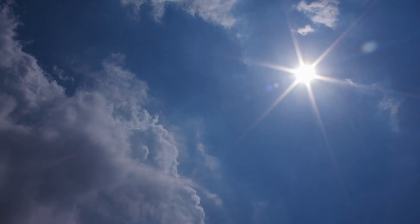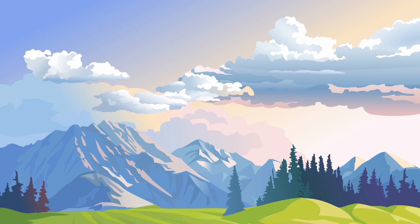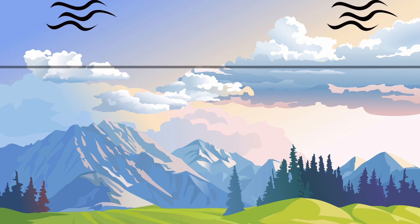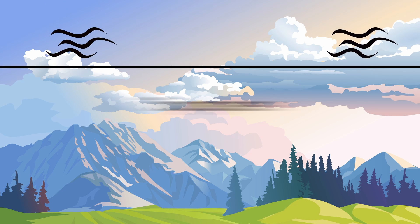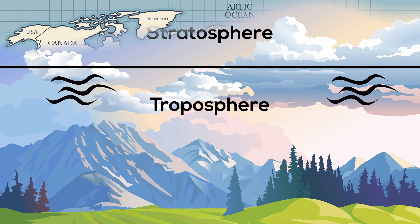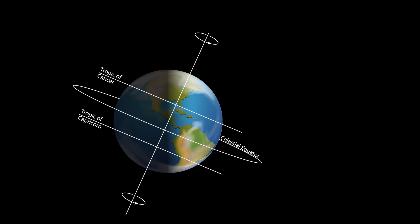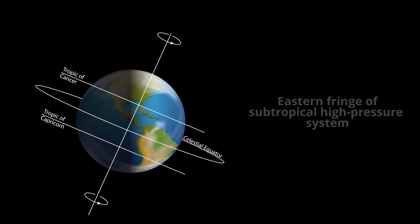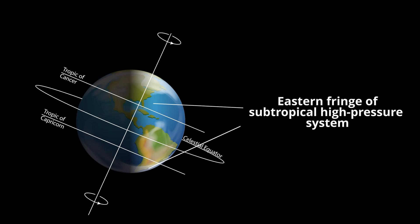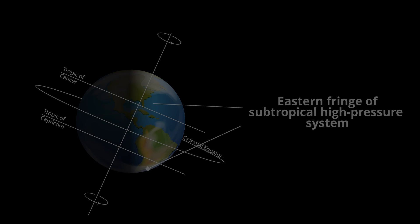Enhanced sunshine throughout the year also plays a contributing role here. This phenomenon can be attributed to the descent of air from the boundary between the troposphere and stratosphere in regions like Western Australia, North Africa, the Middle East, and Southwestern United States, all of which are located on the eastern fringe of subtropical high-pressure systems.